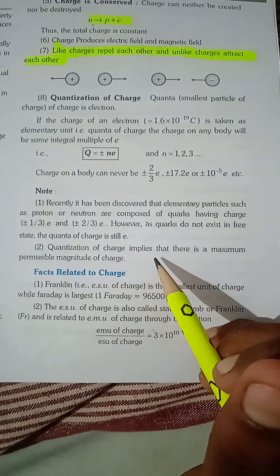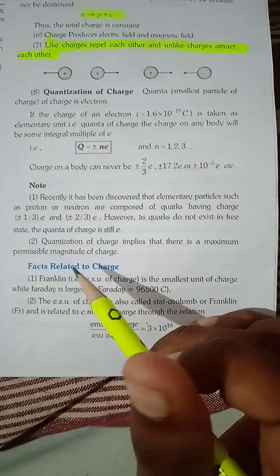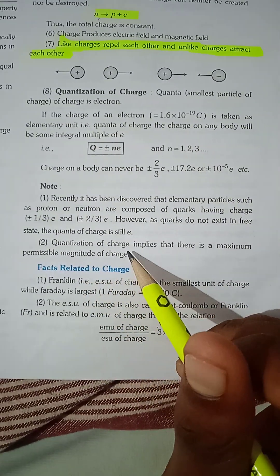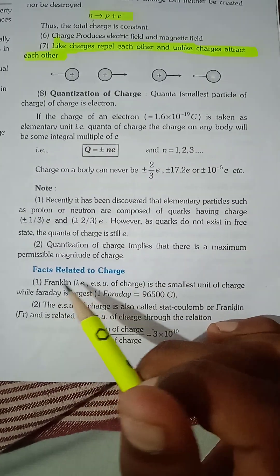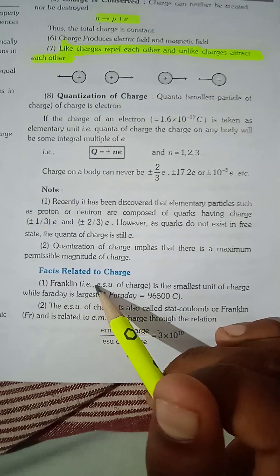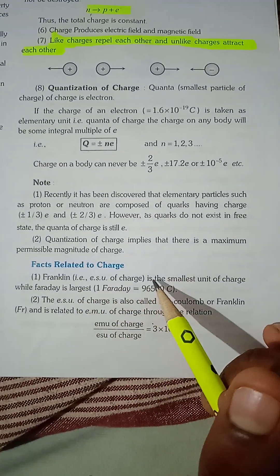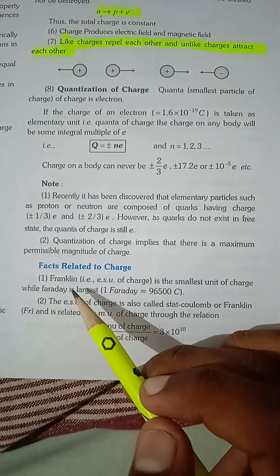Quantization of charge implies that there is maximum permissible magnitude of charge. Facts related to charge: ESU of charge is the smallest unit of charge while Faraday is the largest.